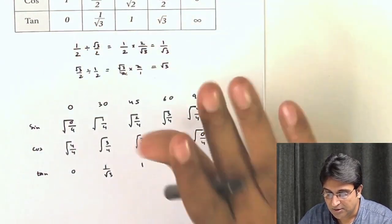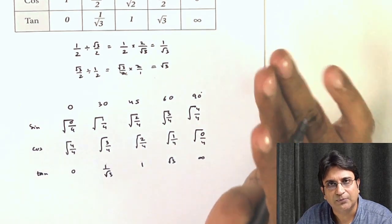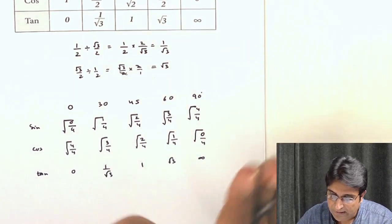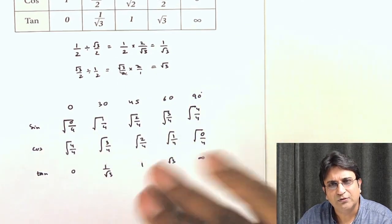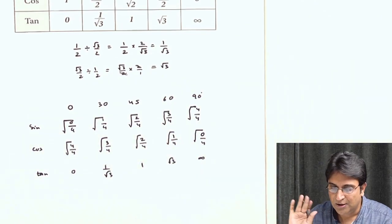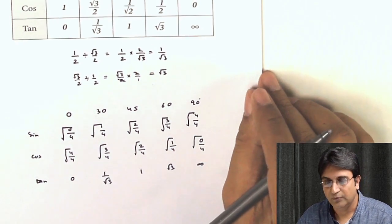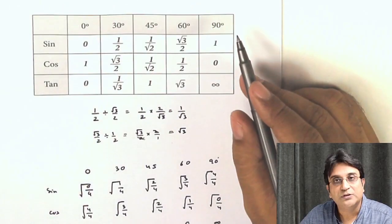Learn the table by writing it several times. What you do is you see it very carefully, then you write without seeing, compare, then again write it, again compare. Repeat this five to six times and you will be pretty fluent with the table.